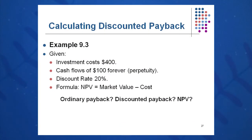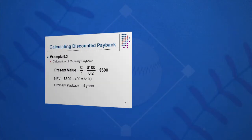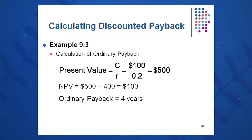Here's an example of discounted payback. An investment costs $400 and pays $100 each year in perpetuity — $100, $100, $100 — essentially an annuity and a perpetuity. The discount rate is 20%. When is the CFO paid back on an ordinary basis and on a discounted basis? Ordinary payback is very simple: it's four years.